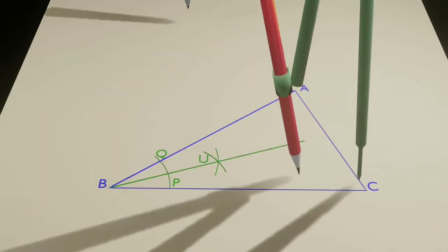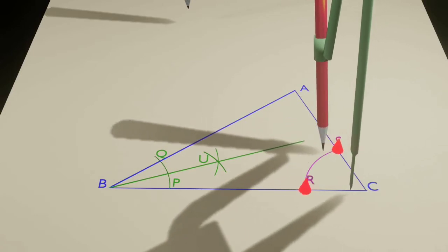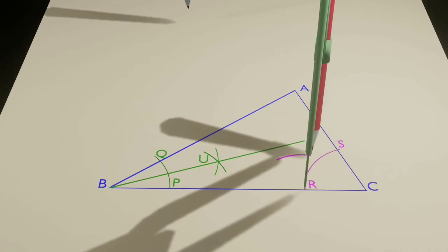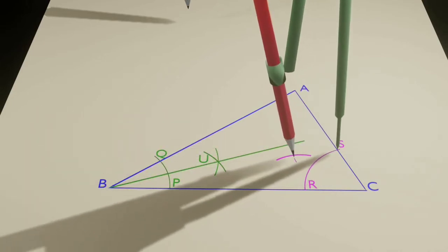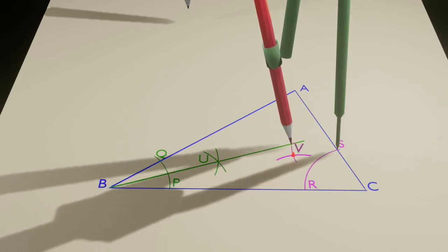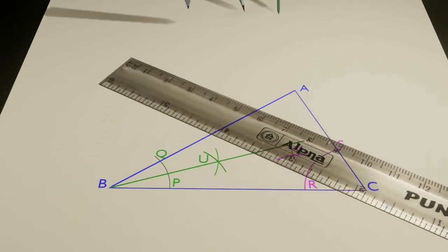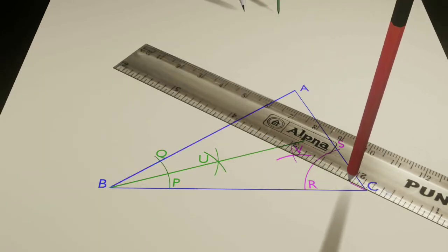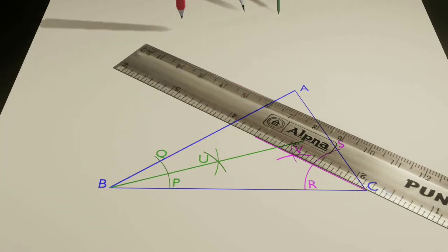Next we are going to bisect the angle ACD in the same manner as we did earlier. Thus we get another bisector called CV. Let these two bisectors connect at point W. This point W will be the center of the inscribed circle.